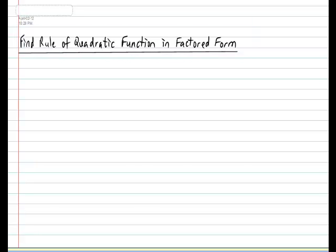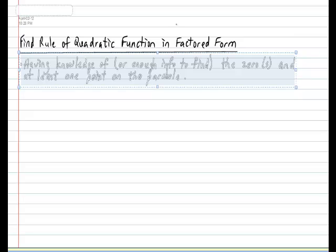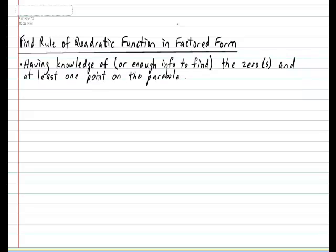Finding the rule of a parabola in factored form is extremely easy as long as we know the following: We are either given the zeros of the parabola or enough information to locate them, and we know at least one point on the parabola.